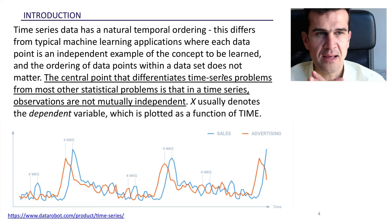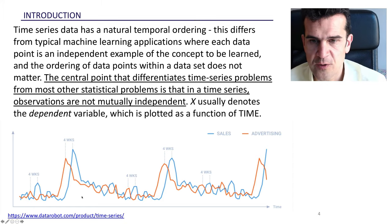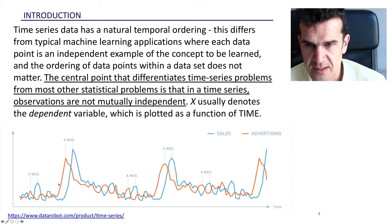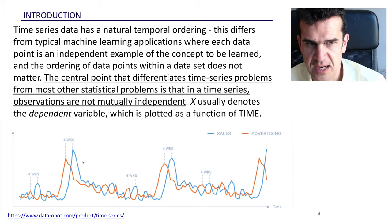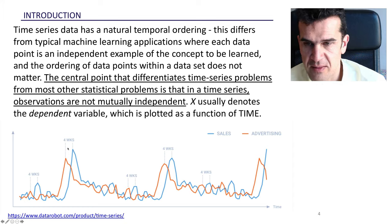A time series is a dataset ordered in time with a natural temporal ordering. Here we can see two time series: one for advertising expense in orange, and one for sales in blue. The sales time series follows the advertising expense series because when a firm launches a new advertising campaign and spends more money, they typically sell more — in this case, about four weeks later.